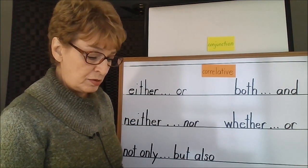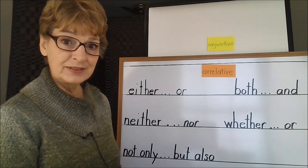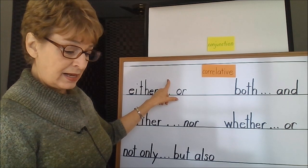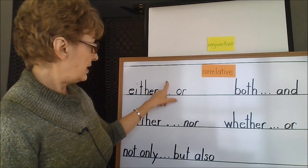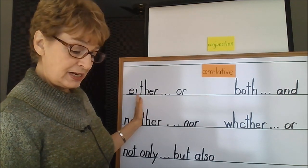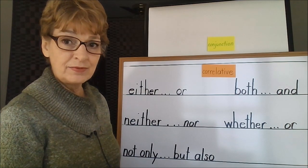The either or. You may have either cheesecake or carrot cake for dessert. You can see that when I read my sentence, cheesecake was in between the either and the or. You may have either cheesecake or carrot cake for dessert.